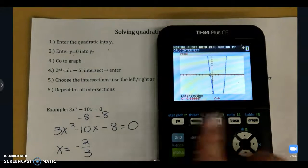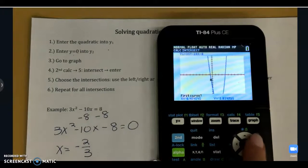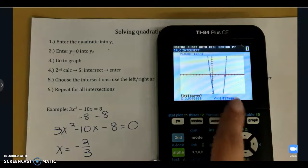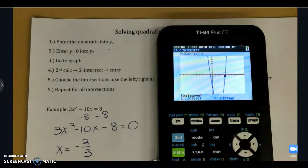Now we're going to do this again, 2nd, calc, 5. And we're going to arrow over to the right to our other intersection. Just arrow over until your black dot is close to that second intersection, and then enter three more times. 1, 2, 3.